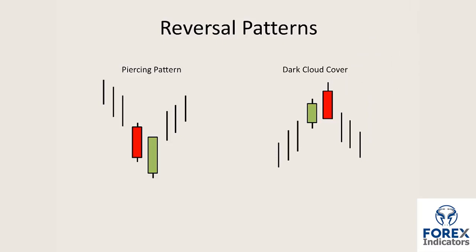On the upside, where the market is rejecting at a level of resistance, this is also a piercing pattern, but in Japanese candlestick terms is called dark cloud cover. What's happening here is the market has pushed up and formed the green candle, we then get a gap up, the market pushes higher, then sellers come in and push the market back down, closing beyond 50% of the body of the preceding candle.